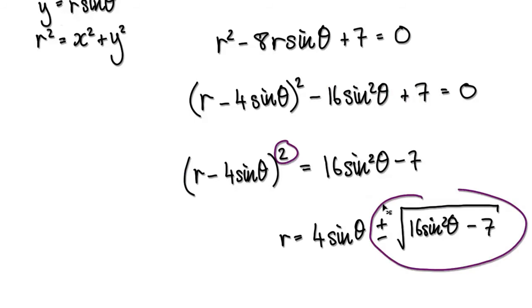You will get two versions, the positive and negative version. Then add this, which gives you this. So r equals this.